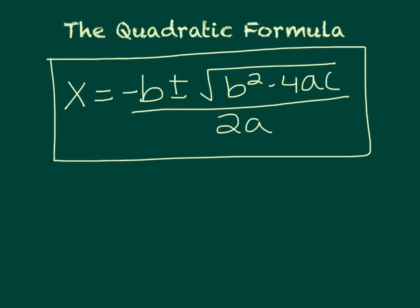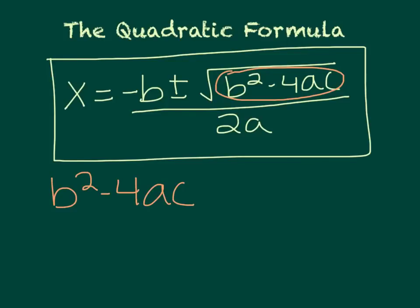An important part of the quadratic formula is the part underneath the radical sign: b² minus 4ac only. That's one single number, and that's what we call the discriminant — not to be confused with the determinant from the matrices chapter. The discriminant tells you what kind of answer you're going to have.